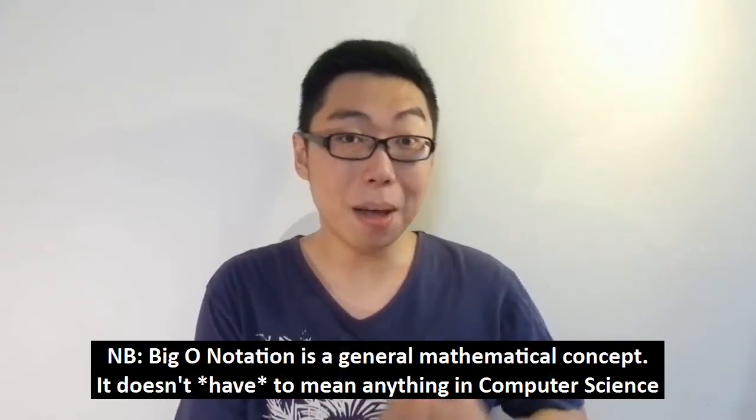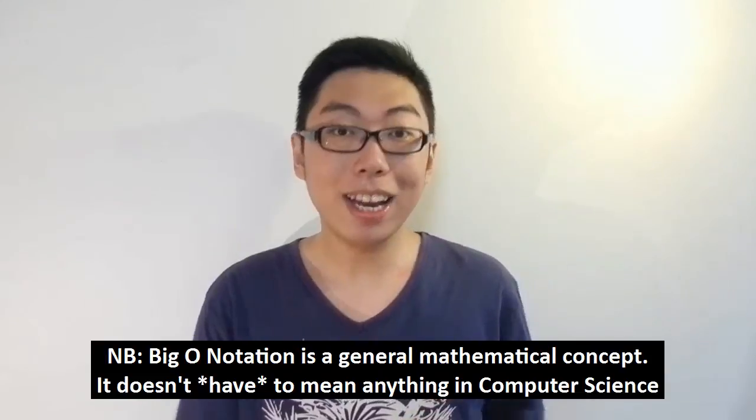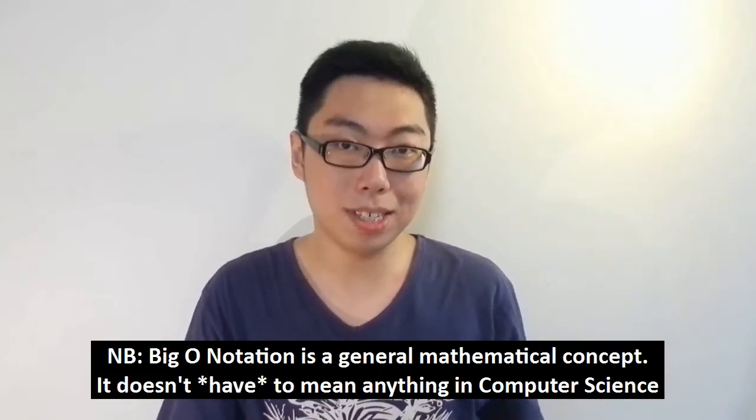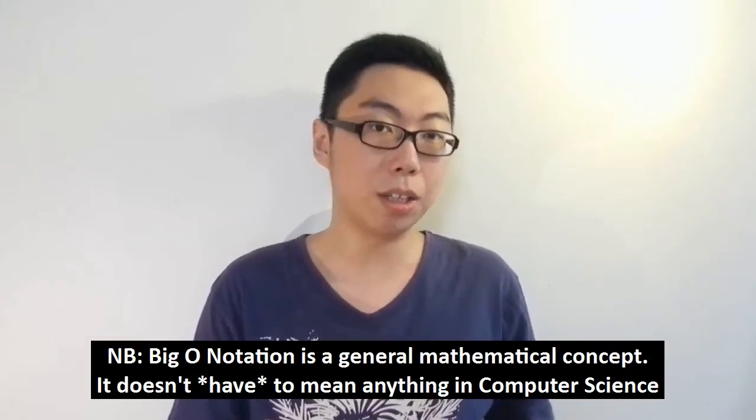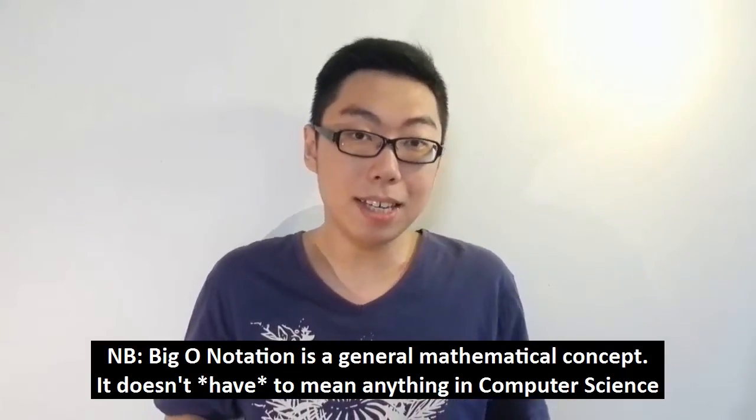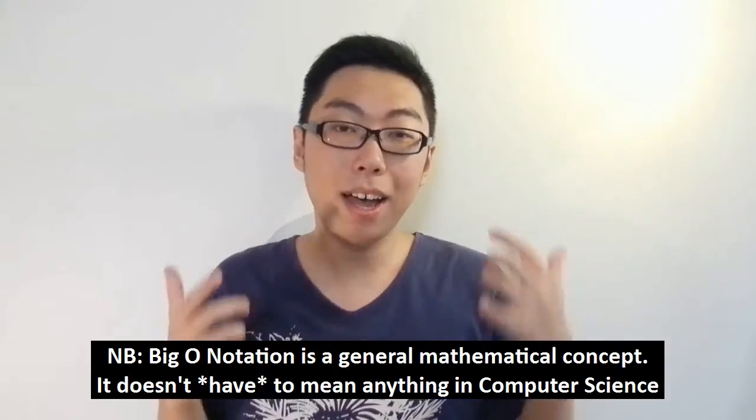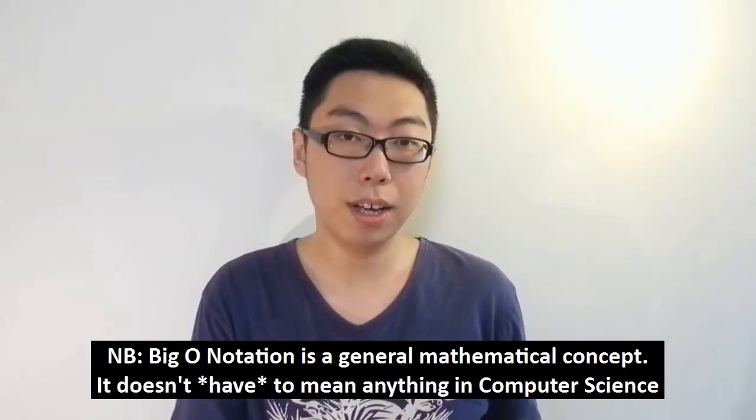And that's because, really, the big O notation is just a mathematical concept. It actually has nothing to do with computer science. It just happens to be a convenient way for us to express certain things in computer science like time complexity and space complexity, and that is why we use this notation. But do bear in mind that this notation in and of itself does not really have anything to do with algorithms.